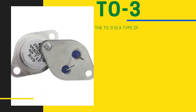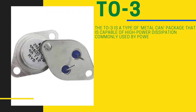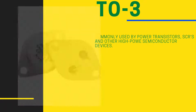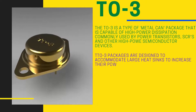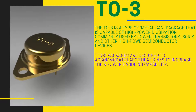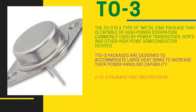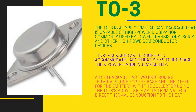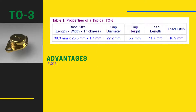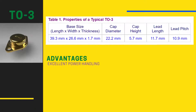The TO3 is a type of metal can package capable of high power dissipation, commonly used by power transistors, SCRs, and other high power semiconductor devices. TO3 packages are designed to accommodate large heat sinks to increase their power handling capability. A TO3 package has two protruding terminals — one for the base and the other for the emitter — with the collector using the TO3's body itself as its terminal for direct thermal conduction to the heat sink. The package outline dimensions are given in the table shown.